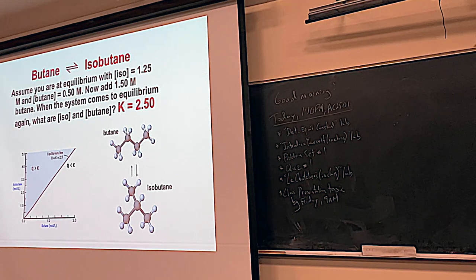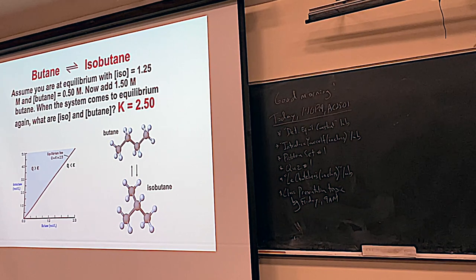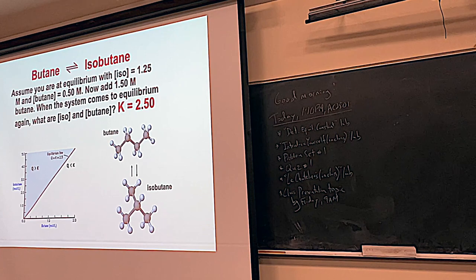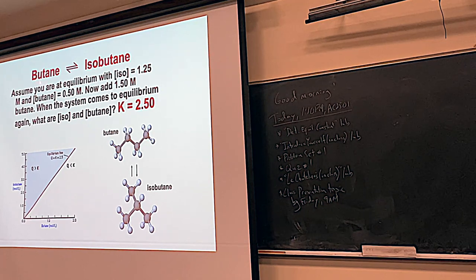Le Chatelier's principle is super helpful here. If you add more butane, any time you add a chemical, the reaction is going to shift to the other side. So if you add butane, it should shift to make more isobutane. Conversely, if we added more isobutane, it would shift to make more butane — it always moves to the opposite side. Conversely, if you take away a chemical, the reaction will try to make more of what you removed.